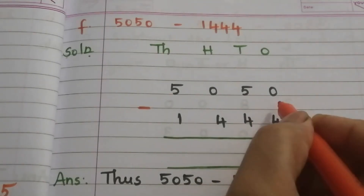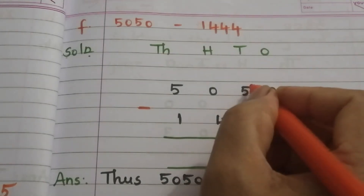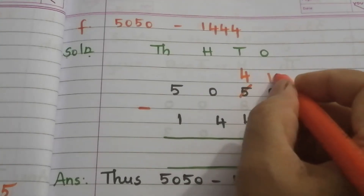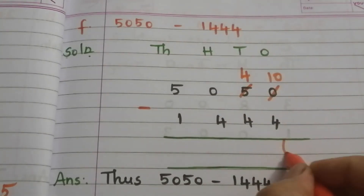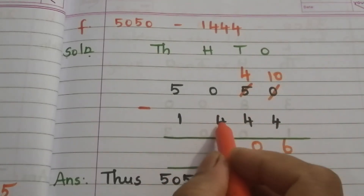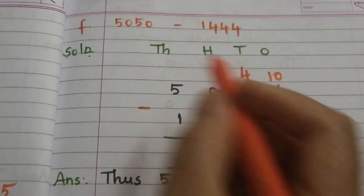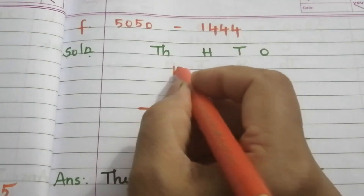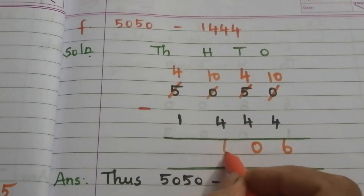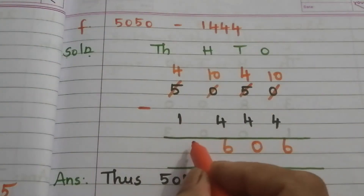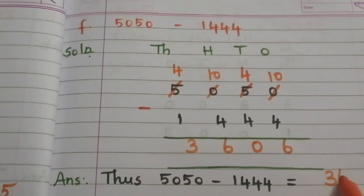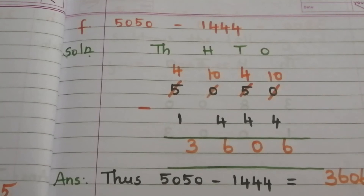We can't subtract 4 from 0, so we borrow from 5 — 5 becomes 4 and this 0 becomes 10. 10 minus 4 is 6, and 4 minus 1 is 3. So the answer is 3606.